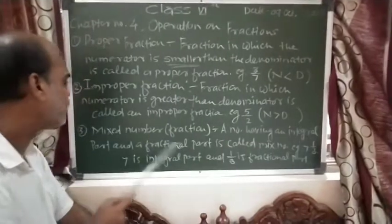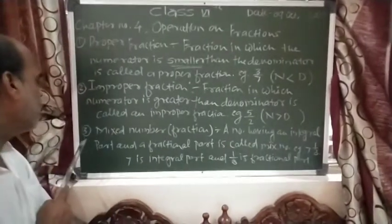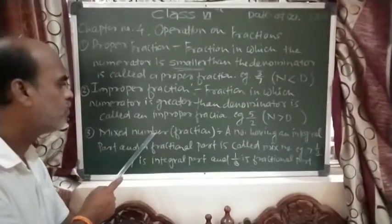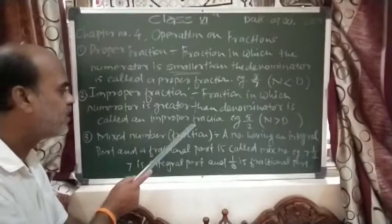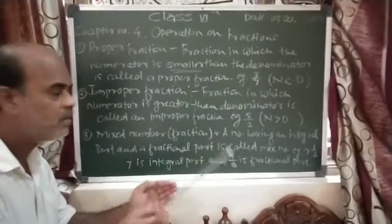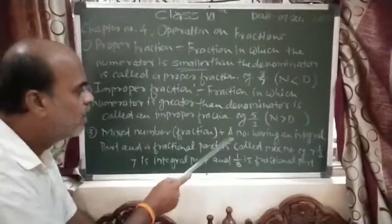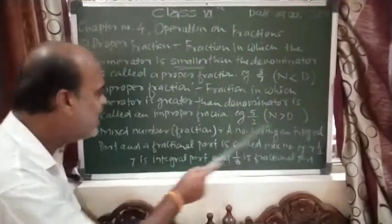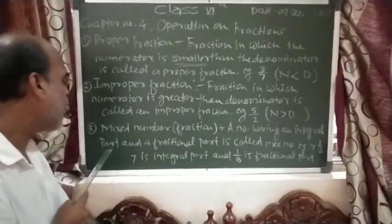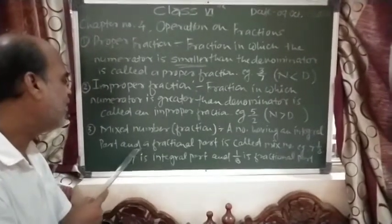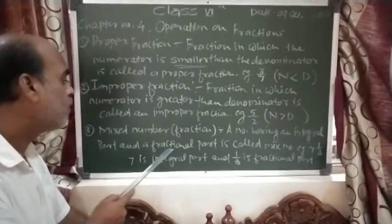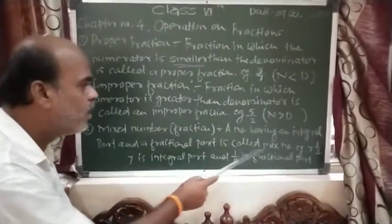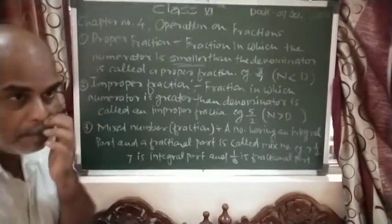The third type of number is a mixed number. A mixed number is a number having both an integral part and a fractional part.